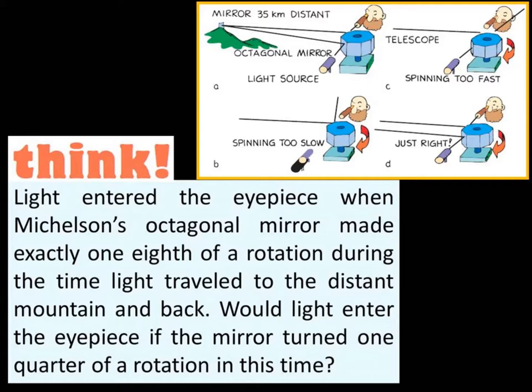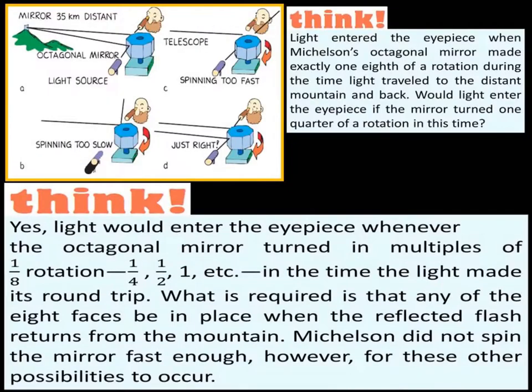Michelson's experimental value for the speed of light was 299,920 kilometers per second, which is usually rounded off to 300 kilometers per second. Michelson received the 1907 Nobel Prize in Physics for this experiment. He was the first American scientist to receive this prize. We now know that the speed of light in a vacuum is a universal constant, three times ten to the eighth meters per second. Light is so fast that a beam of light could travel around the earth 7.5 trips in one second. Light would enter the eyepiece whenever the octagonal mirror turned a multiple of one eighth rotation in the time the light made this round trip.